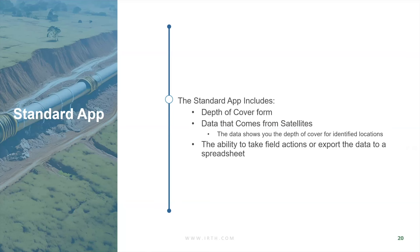In terms of what a customer gets when they use this depth of cover offering: you get the depth of cover form where we load in all your prior information with lat-longs of prior readings — we don't care if it's LIDAR, manual, or ILI, as long as we have the lat-long locations. You get the satellite data showing depth of cover at those identified locations. You don't have to give us your entire pipeline; if there's only a particular area of interest, you can just give us that segment. You also get the ability to take field actions, export data to spreadsheets, and there's a ton of automation that comes with the offering.